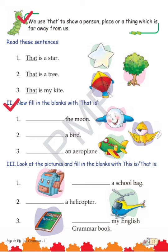The first one: 'dash the moon' — we will write 'That is the moon'. We are writing 'that is' because the moon is drawn after the line ends. Line ke right side mein kuch bhi draw hoga toh hum 'that is' use karenge. Number two and number three are your homework.